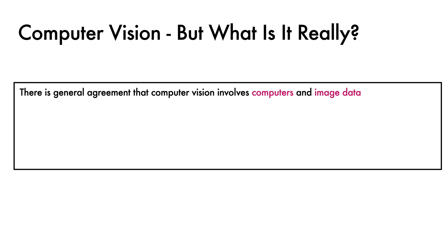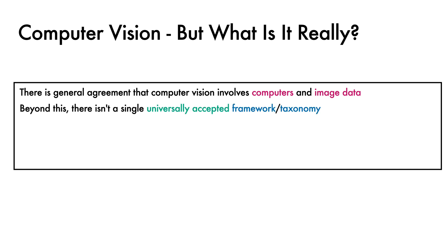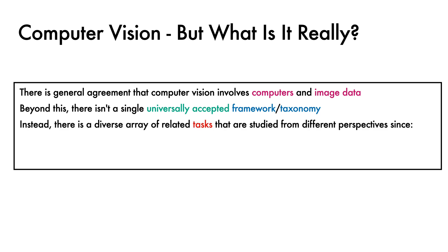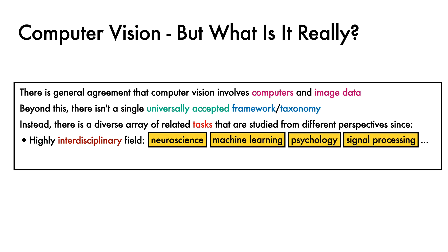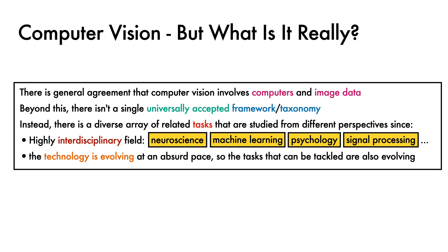There is fairly broad agreement that computer vision involves computers and some form of image data. However, beyond this, there isn't a single universally accepted framework or taxonomy that defines the field. Instead, there is a diverse array of tasks that are studied from different perspectives. Computer vision is a highly interdisciplinary field that draws on ideas from neuroscience, machine learning, psychology, signal processing, and many other fields. The technology is also evolving at what can best be described as an absurd pace, and so the tasks that can be tackled are also evolving. To make things concrete, we'll start by looking at some foundational, widely studied tasks.